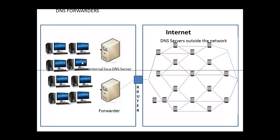But sometimes you want to make a query outside of your network — you want to make a query to a DNS server on the internet. What you can do is configure a DNS server on your network to become what we call a forwarder, so that any website, any address, any name that you want to query outside of the network goes through the forwarder. The forwarder receives that request and then sends it out to the DNS servers on the internet.